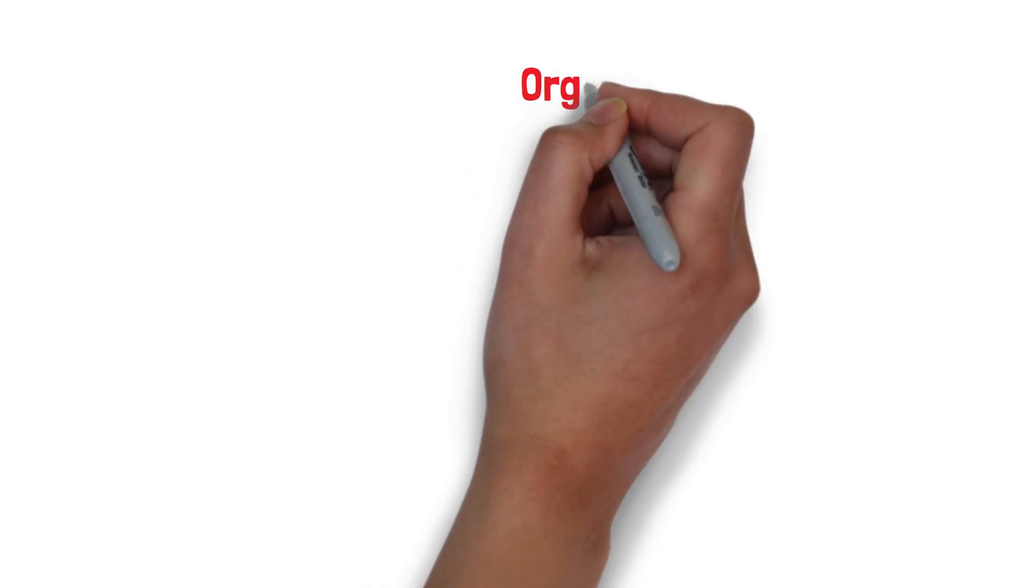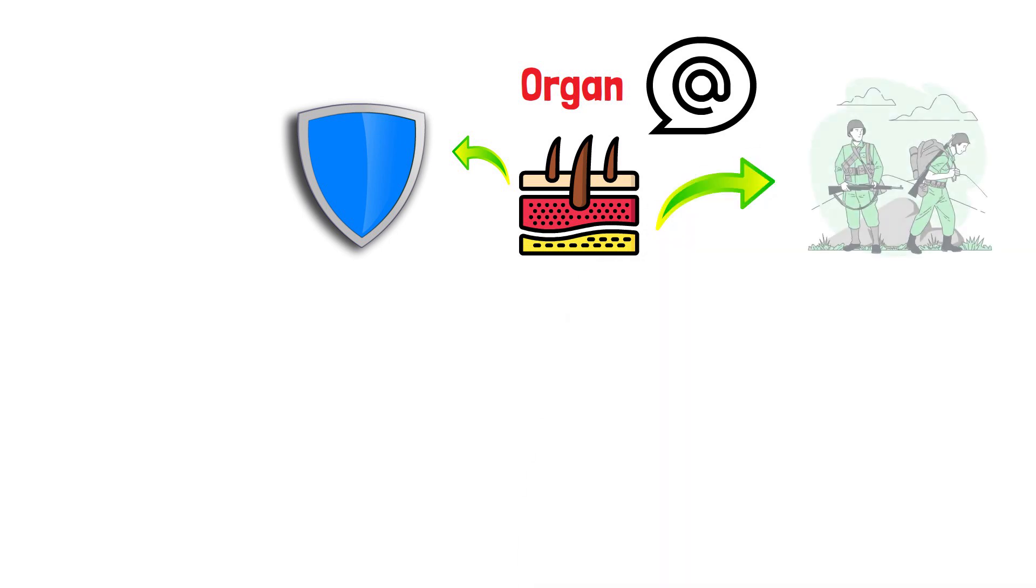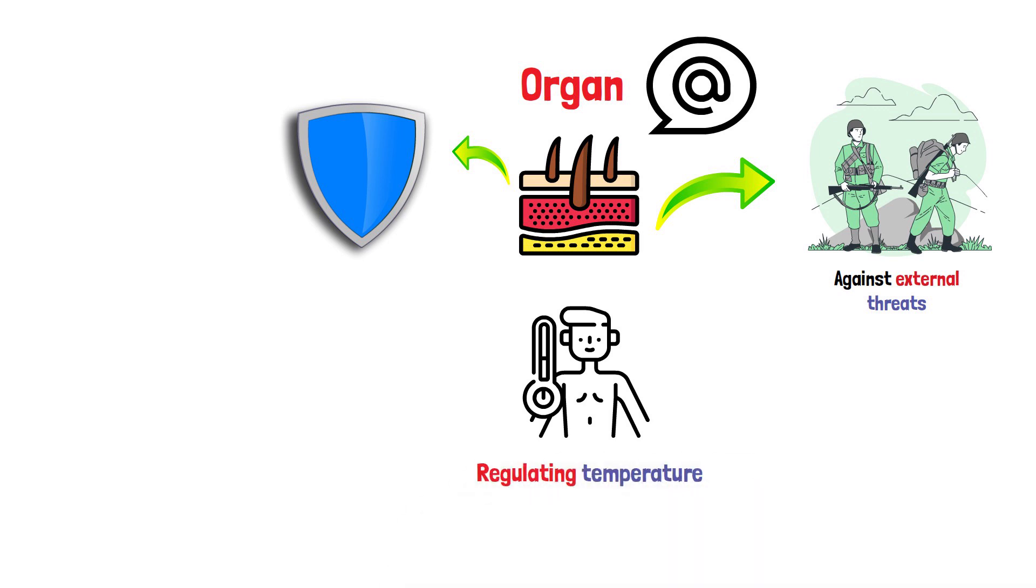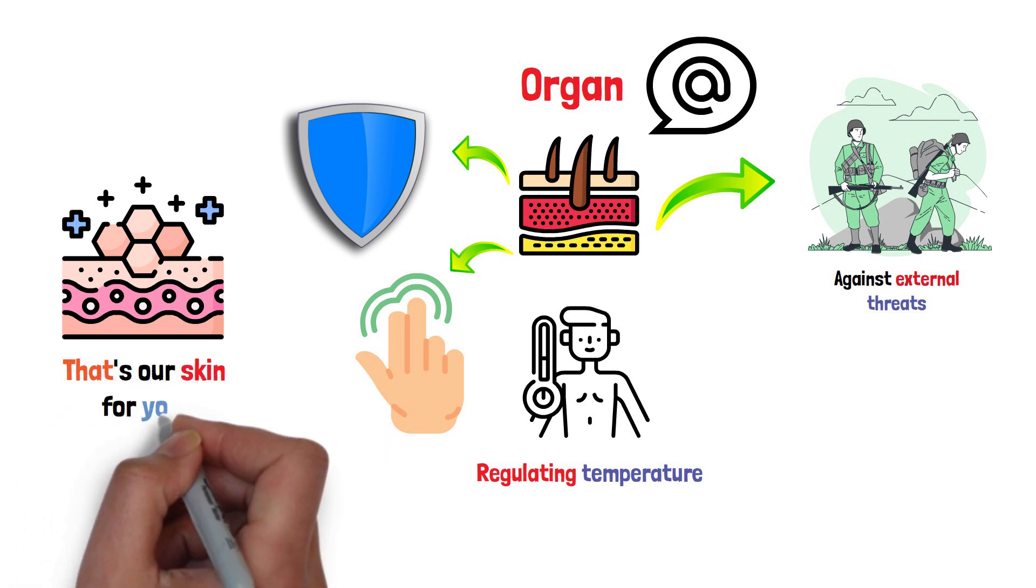One organ that deserves a special mention is the skin. It's like the city's shield, the first line of defense against external threats. It's also the body's thermostat, regulating temperature, and a sensory canvas that keeps us in touch with the outside world. Imagine a complex structure with different layers, each having distinct functions, that's our skin for you.